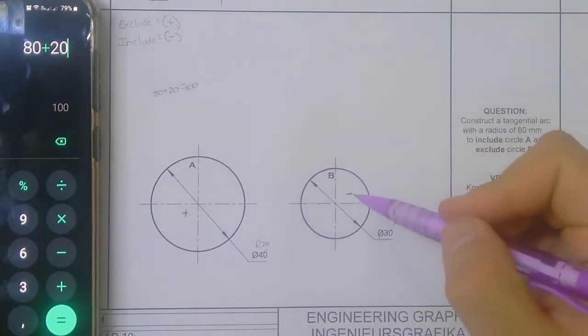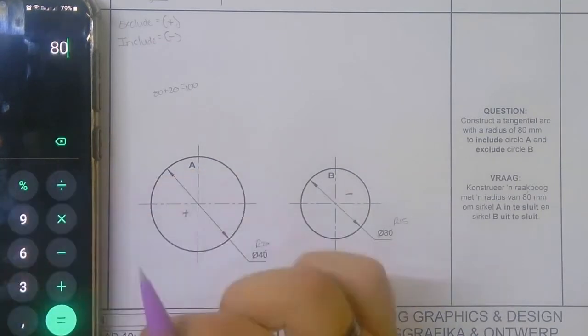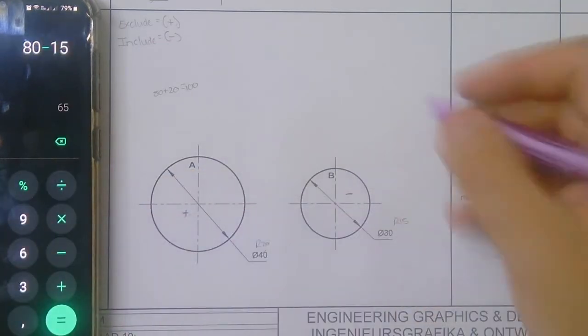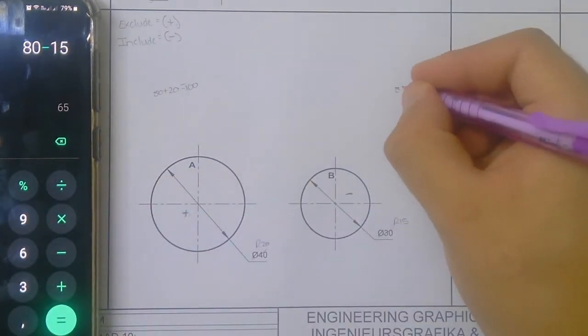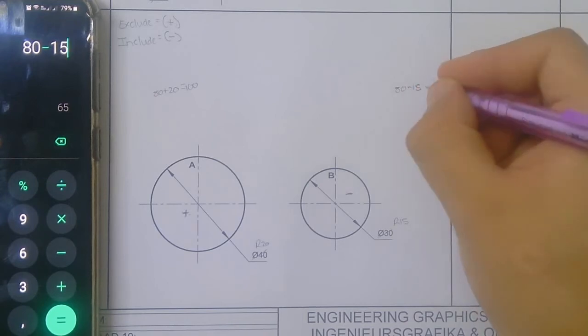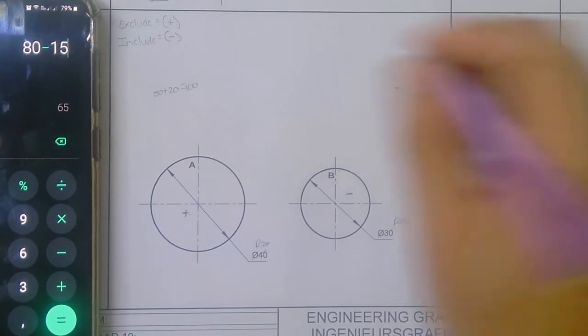Now we're including on B. So what are we going to do? We're going to take 80 minus 15, that gives us 65. So 80 minus 15 equals 65.